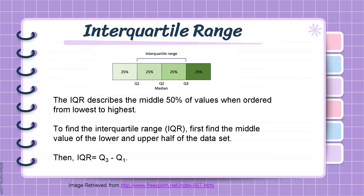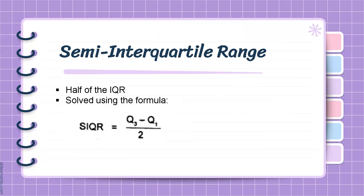Let's now go to interquartile range, or the IQR. The IQR describes the middle 50% of values when ordered from lowest to highest. To find the IQR, we first find the middle value of the lower and upper half of the data set. IQR is therefore equal to the value of the third quartile minus the value of the first quartile. The semi-interquartile range (SIQR) is IQR divided by 2, or Q3 minus Q1 divided by 2.